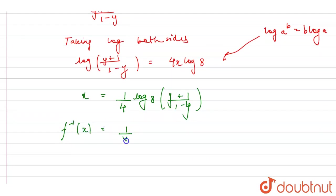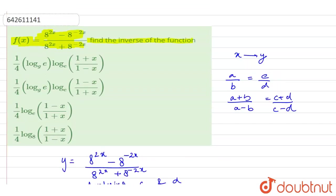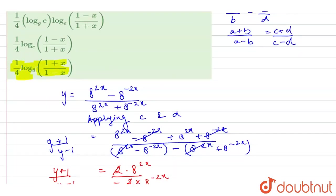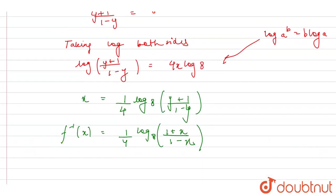We get 1 by 4 log base 8 of 1 plus x upon 1 minus x. So this is our final answer and if you see the options, we find that option D, 1 by 4 log base 8 of 1 plus x upon 1 minus x, is the correct answer. So you can see, okay, I hope you got it. Thank you.